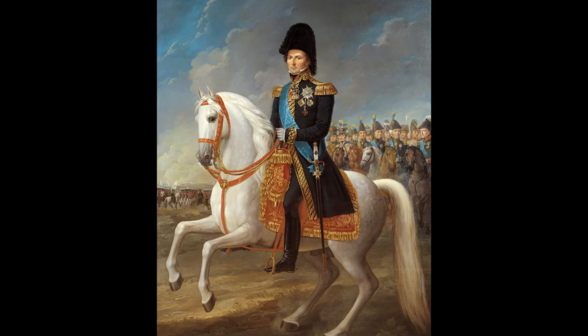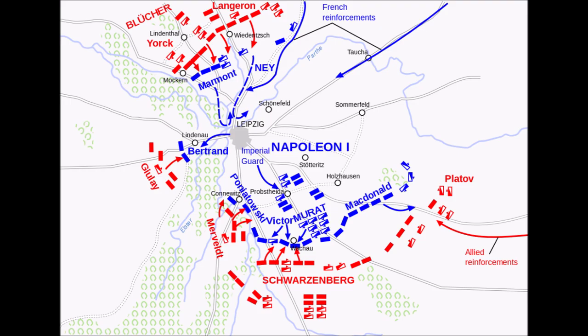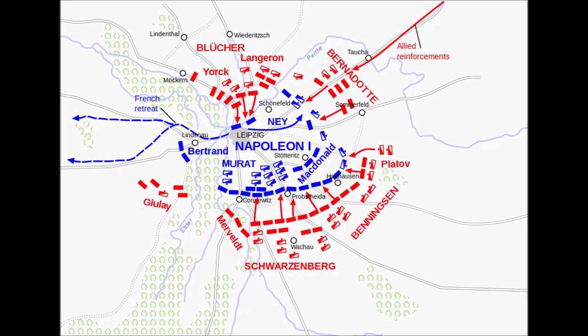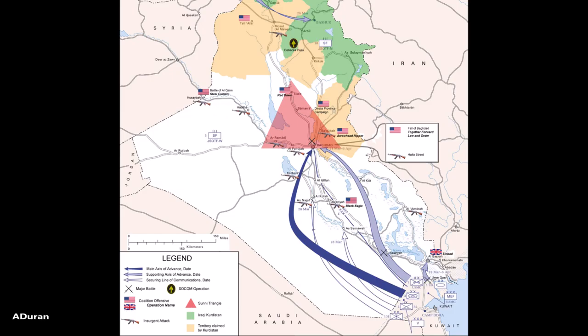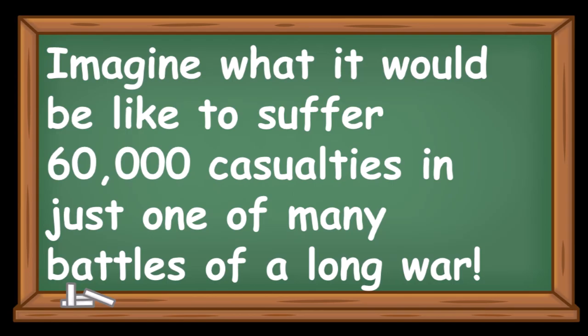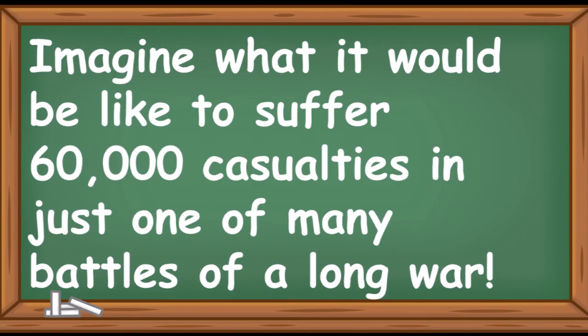A year later, Napoleon's former marshal and future king of Sweden fought with Russia against Napoleon in the massive Battle of Leipzig. In this decisive defeat for Napoleon, the French Emperor's army suffered some 60,000 casualties — nearly half that number dead and wounded — an astonishing number for a single battle when one considers that in over eight years of fighting in Iraq, 2003–2011, the United States of America lost 4,487 killed.